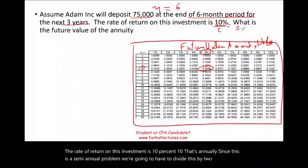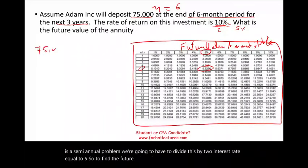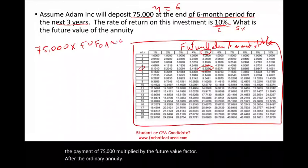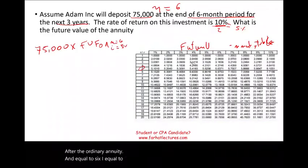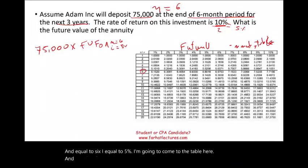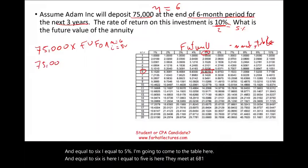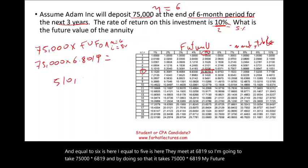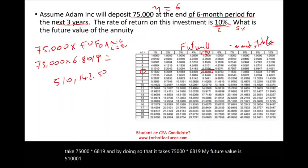To find the future value of this annuity, we take the payment of $75,000 and multiply it by the future value factor of the ordinary annuity with N equal to 6 and i equal to 5%. Coming to the table, N=6 and i=5% meet at 6.8019. So we take $75,000 times 6.8019, giving us a future value of $510,142.50.